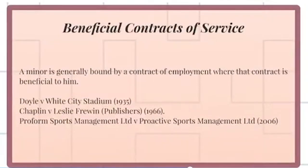A minor is generally bound by a contract of employment where that contract is beneficial to him. This category includes contracts of apprenticeship, training or employment, and professional engagements. As to the overriding requirement that the contract as a whole must be beneficial to the minor, see for example Doyle v. White City Stadium from 1935 and Chaplin v. Leslie Frewen from 1966.